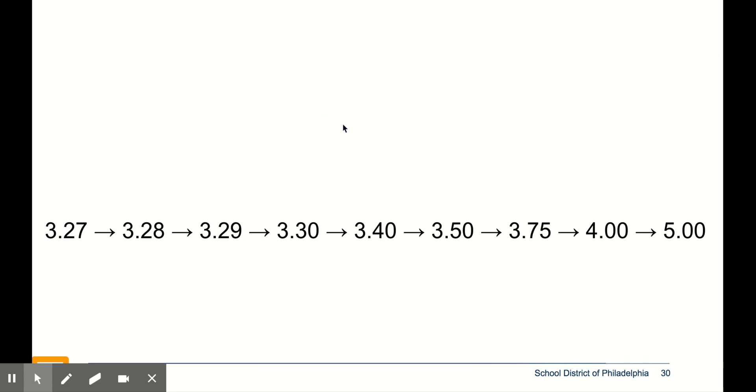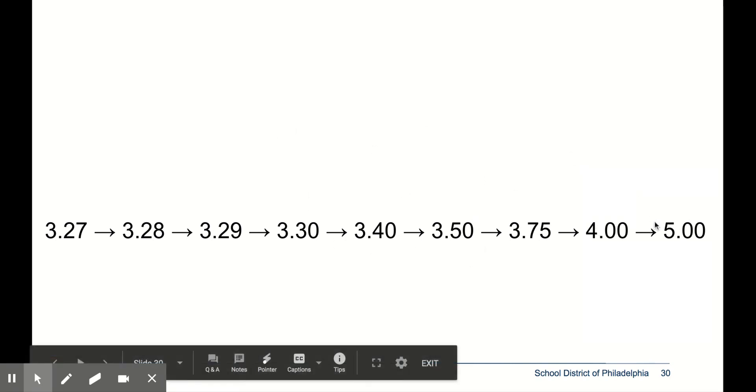All right, imagine you bought something that cost $3.27 and you pay with a $5 bill. To figure out how much change they owe you, you have to get from $3.27 all the way up to $5.